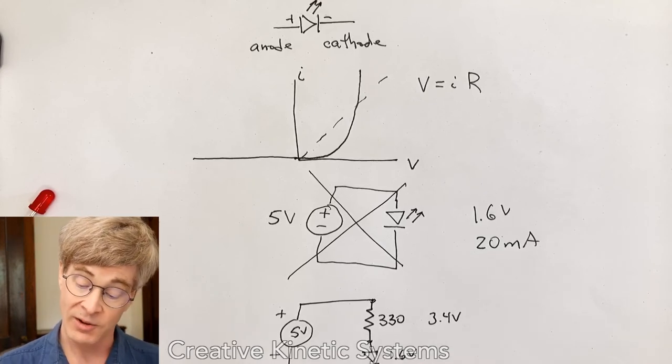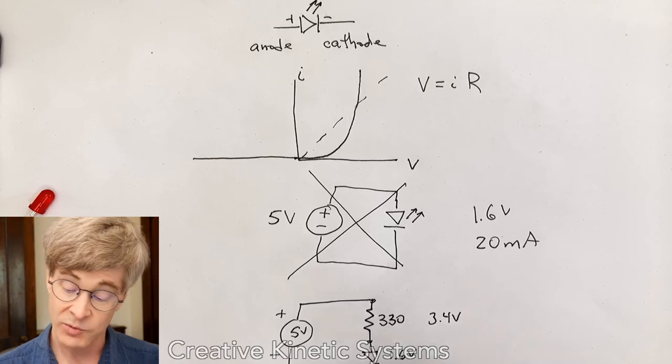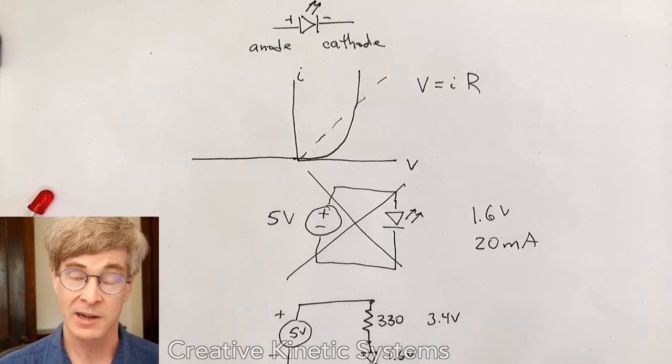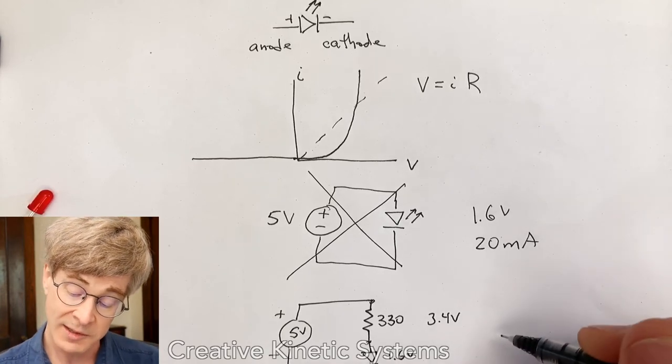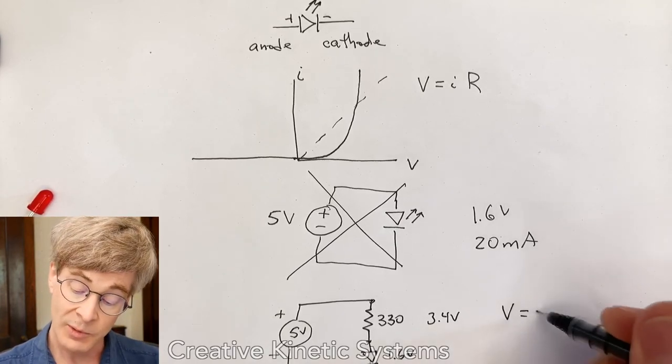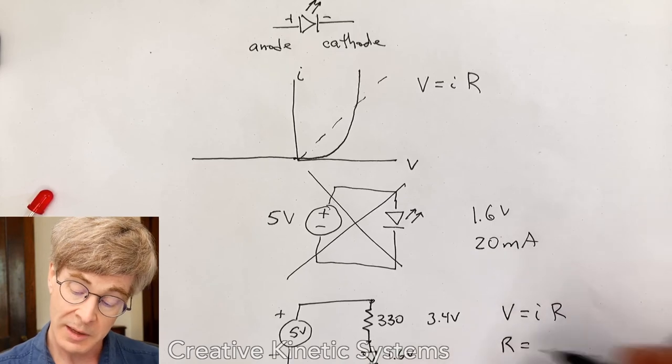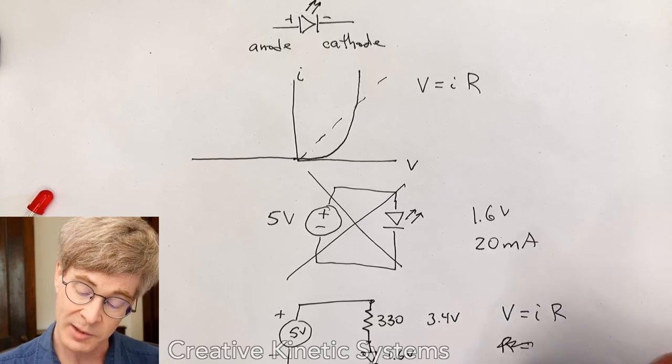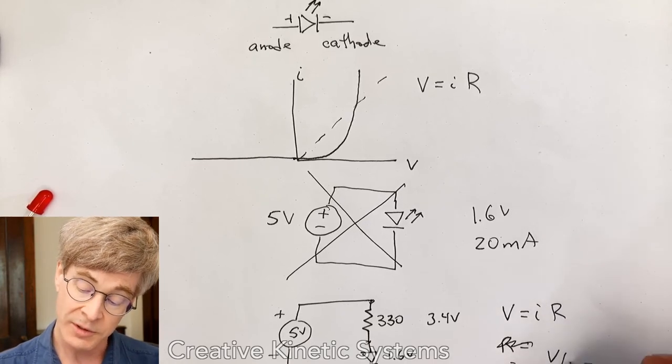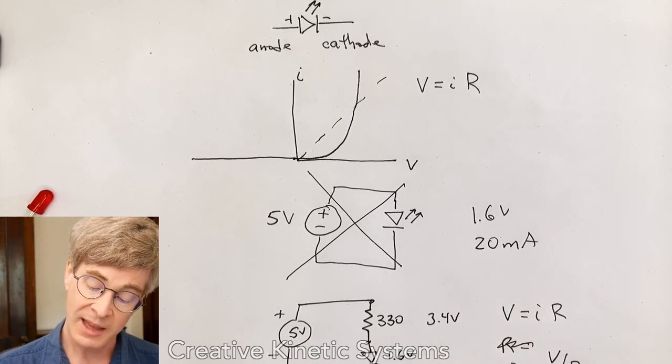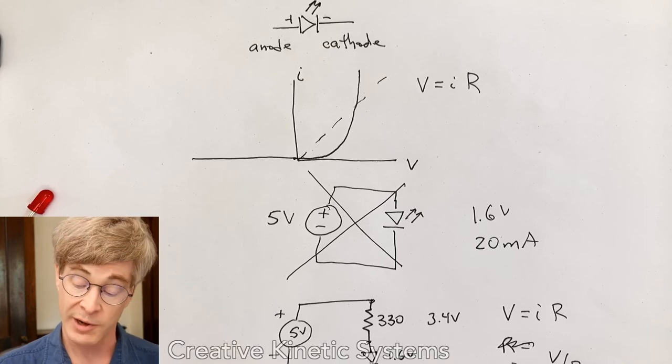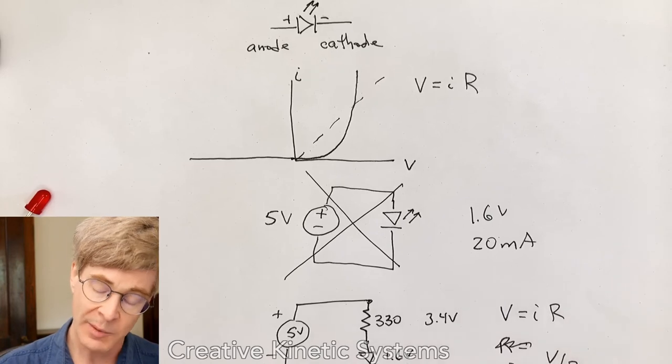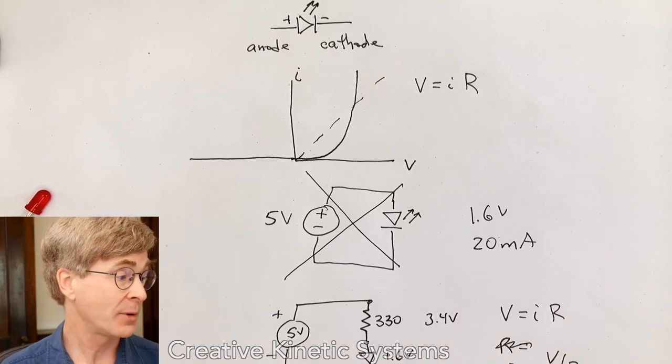With that, we can then go ahead and write out the current. We can look at the resistor. The resistor has a known voltage across it and a known resistance value. And so we start with V equals IR. I'm sorry, I got it backwards. The current is going to be the voltage divided by the resistance. So if we take 3.4 volts and divide it by 330 ohms, we get approximately 10 milliamps,